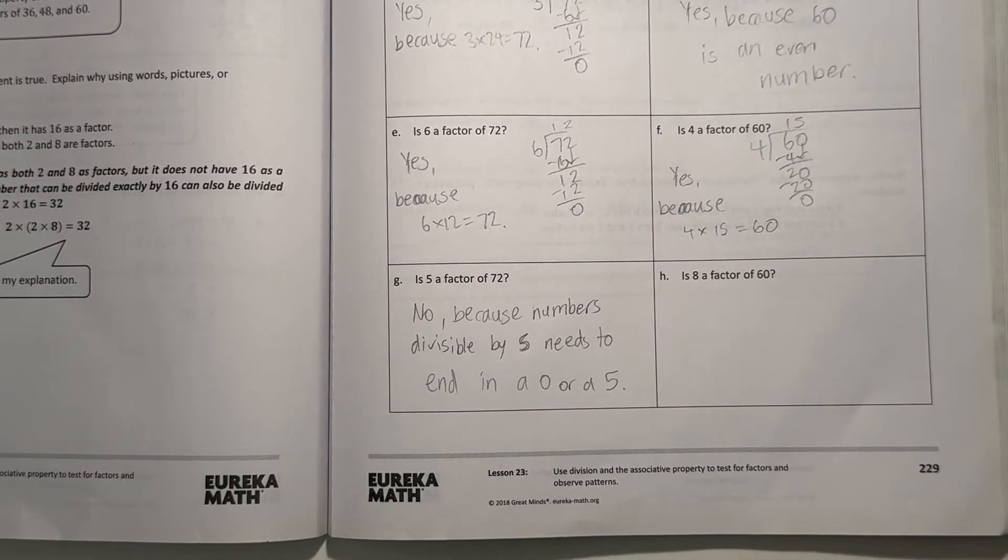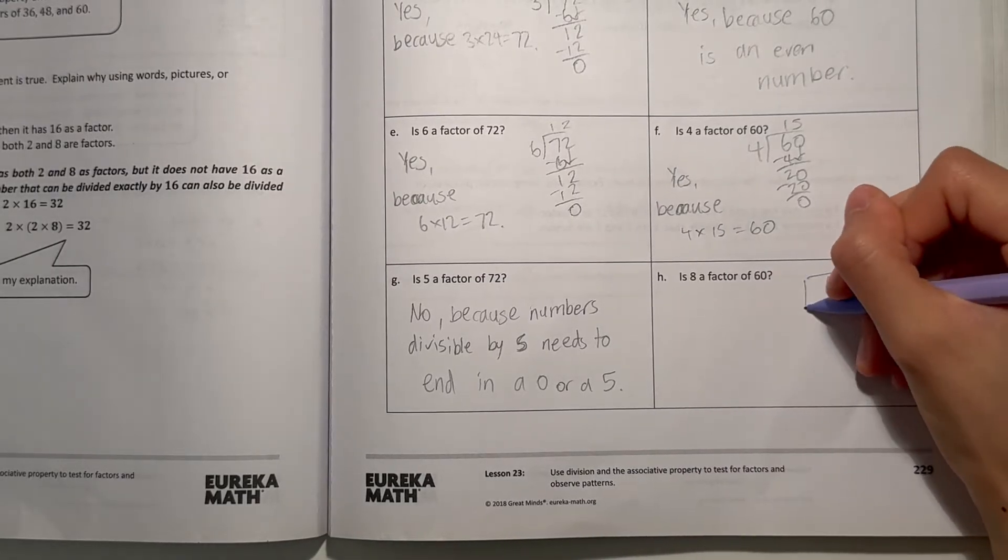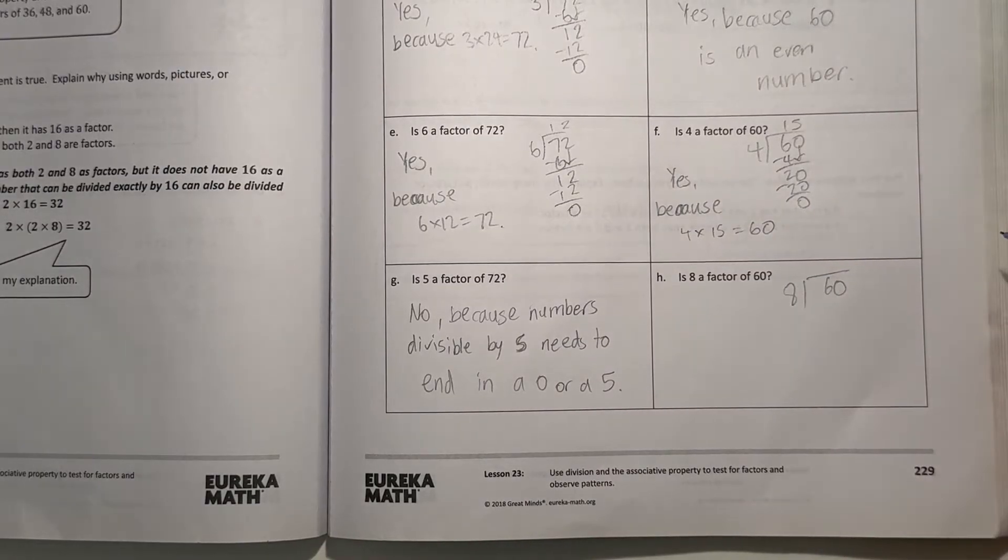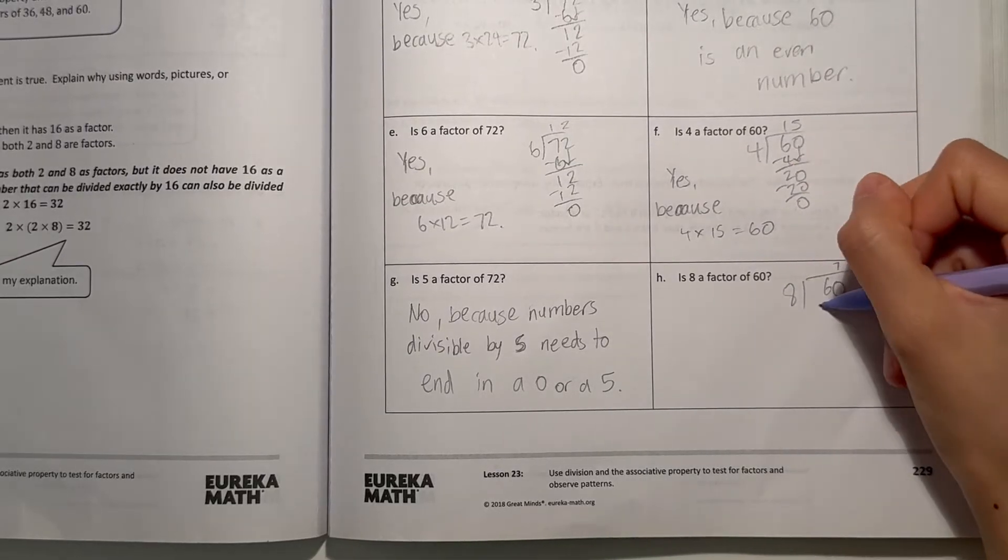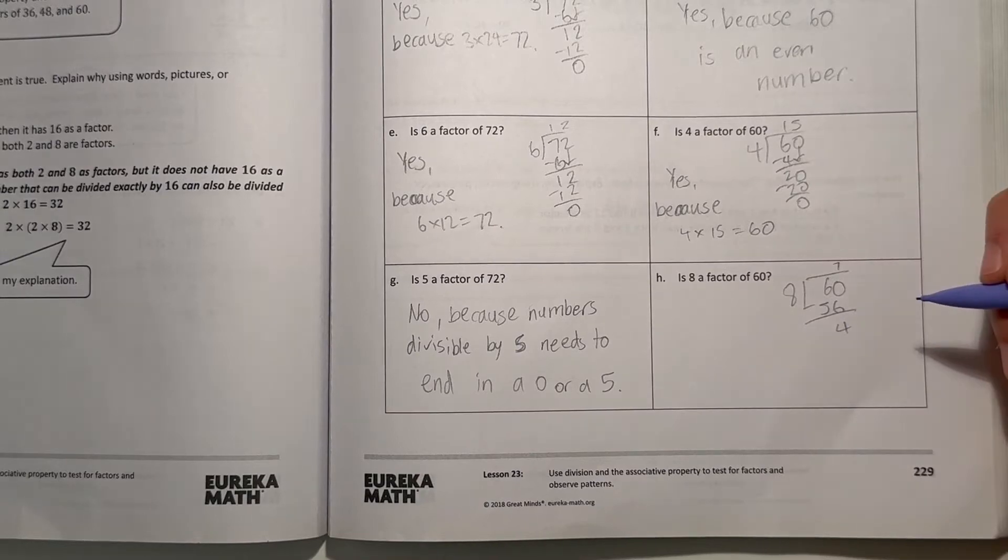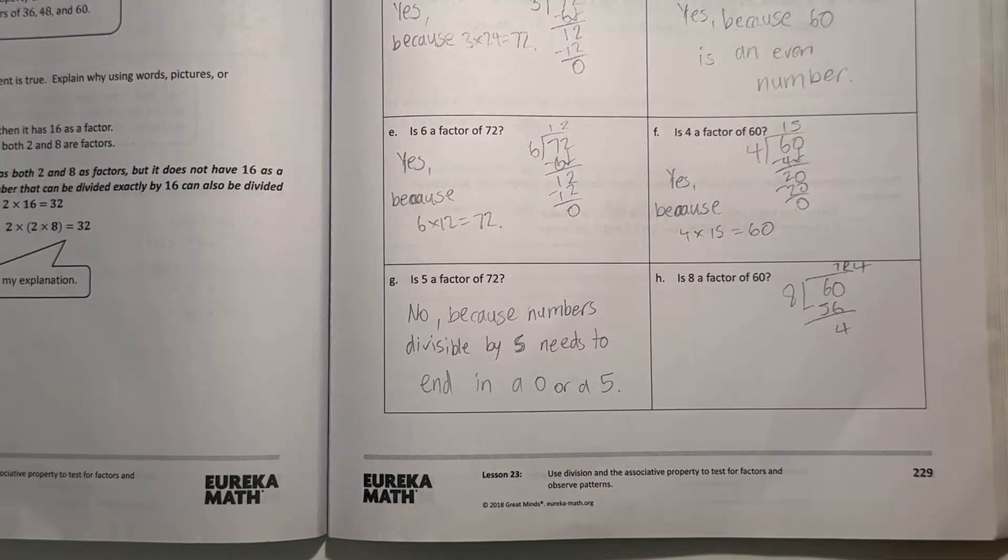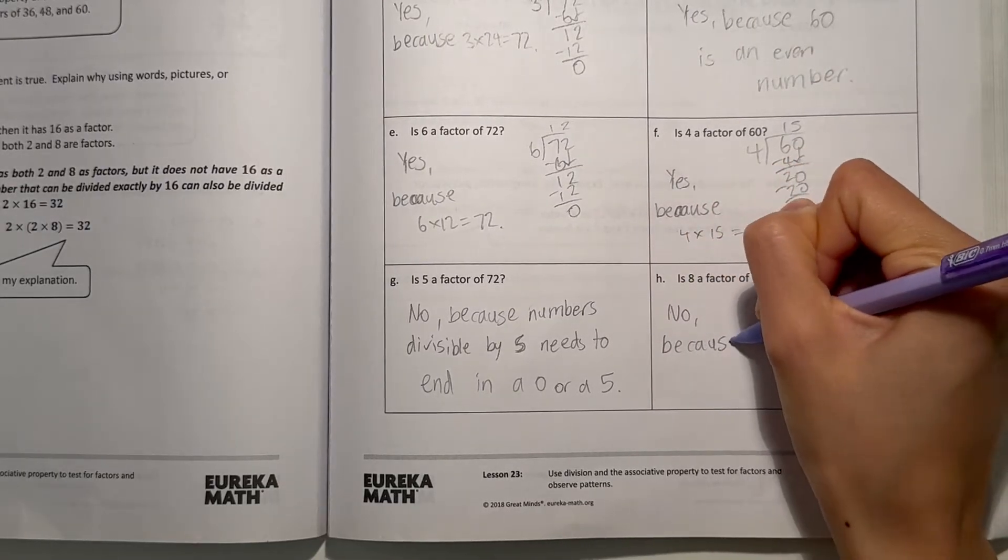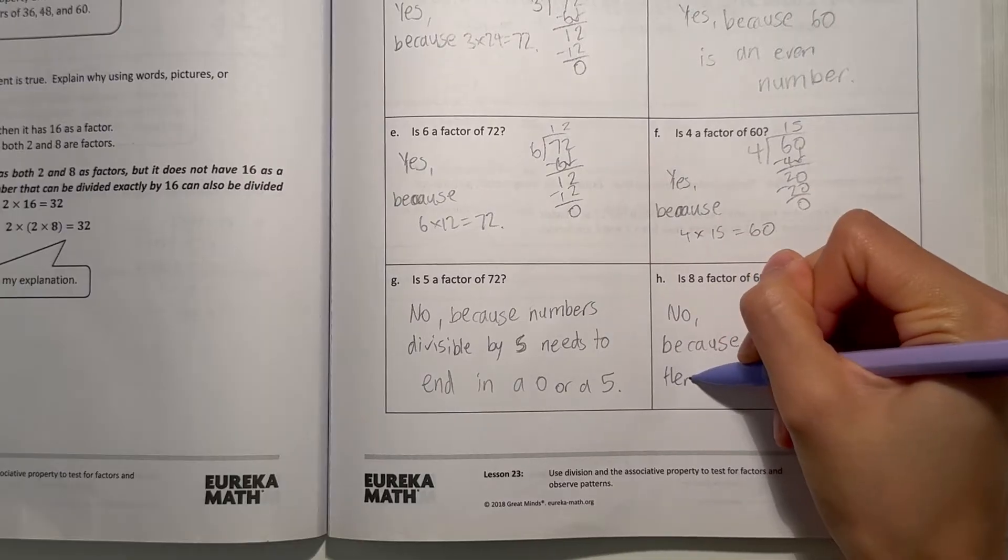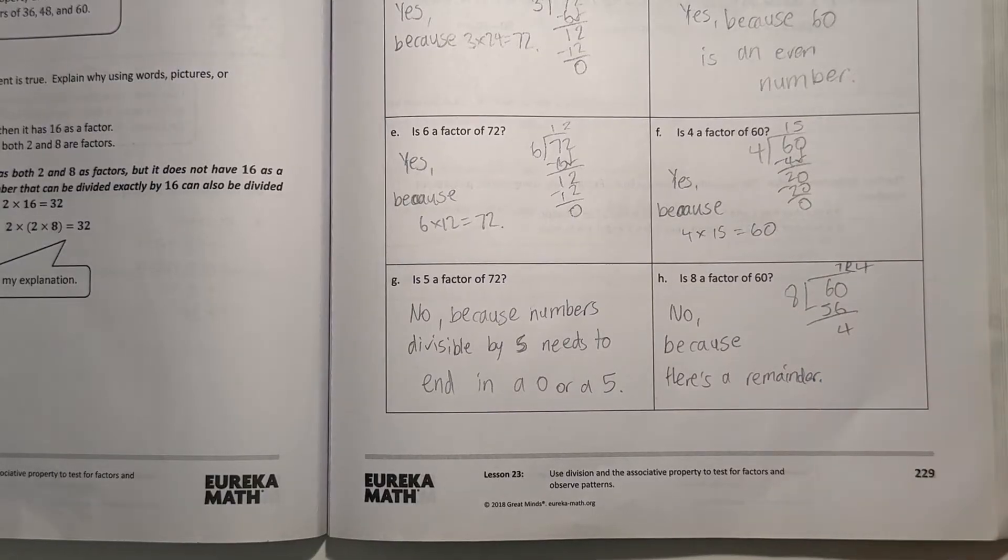H says, is 8 a factor of 60? 60 divided by 8. 8 goes into 6, can't go into 6, so I move on. 8 goes into 60, 7 times, because 8 times 7 is 56. Then we have 4 left over. So 7, remainder 4. So 8 is not a factor, because it cannot go into 60 with no remainders. So no, because there's a remainder.